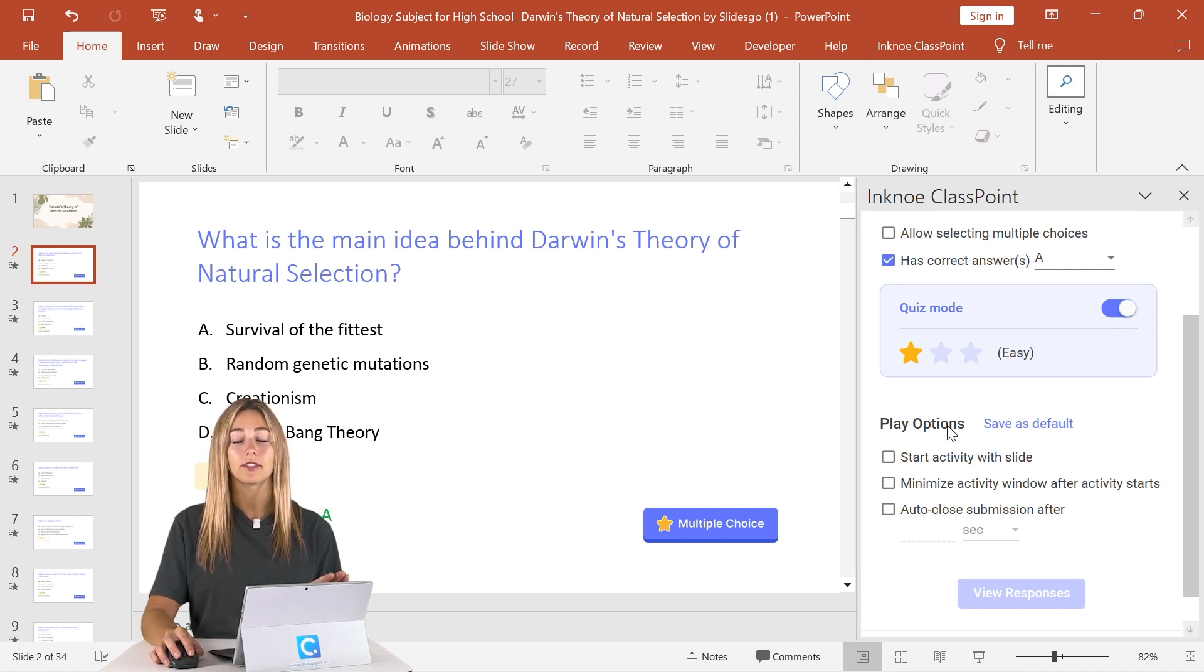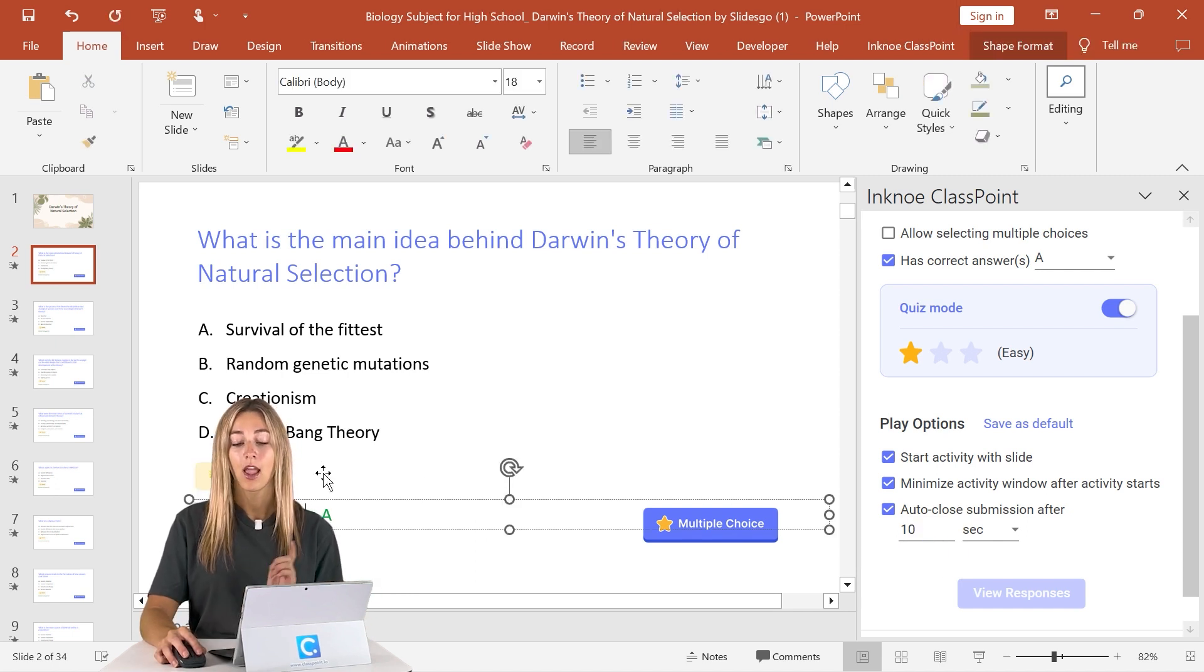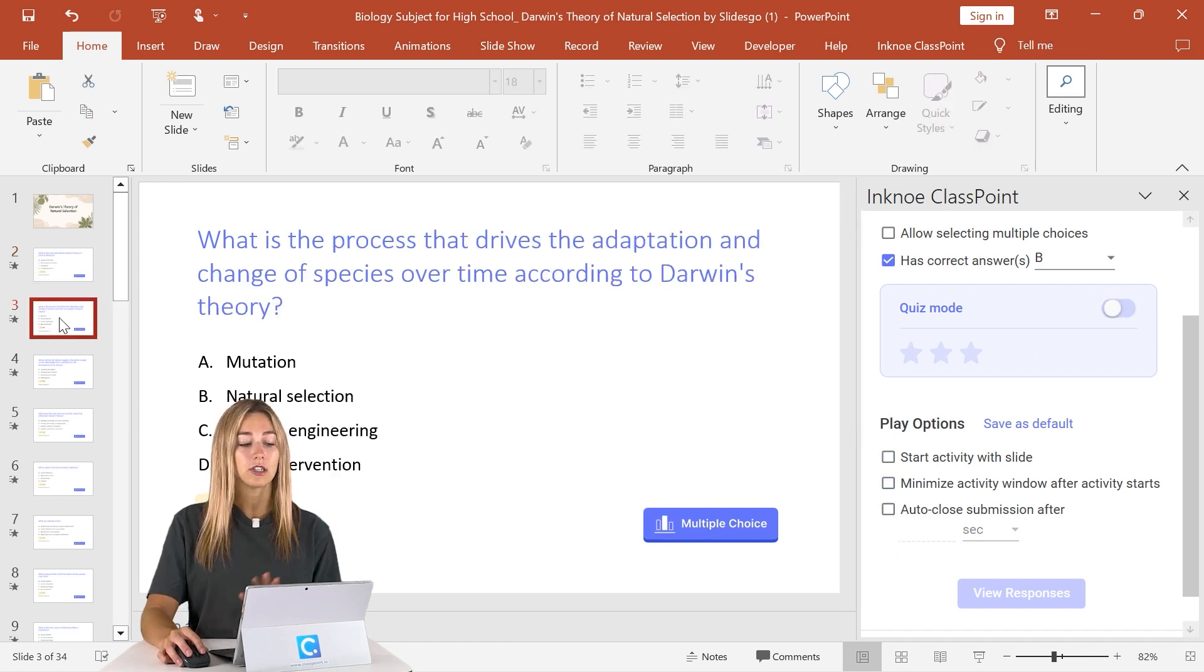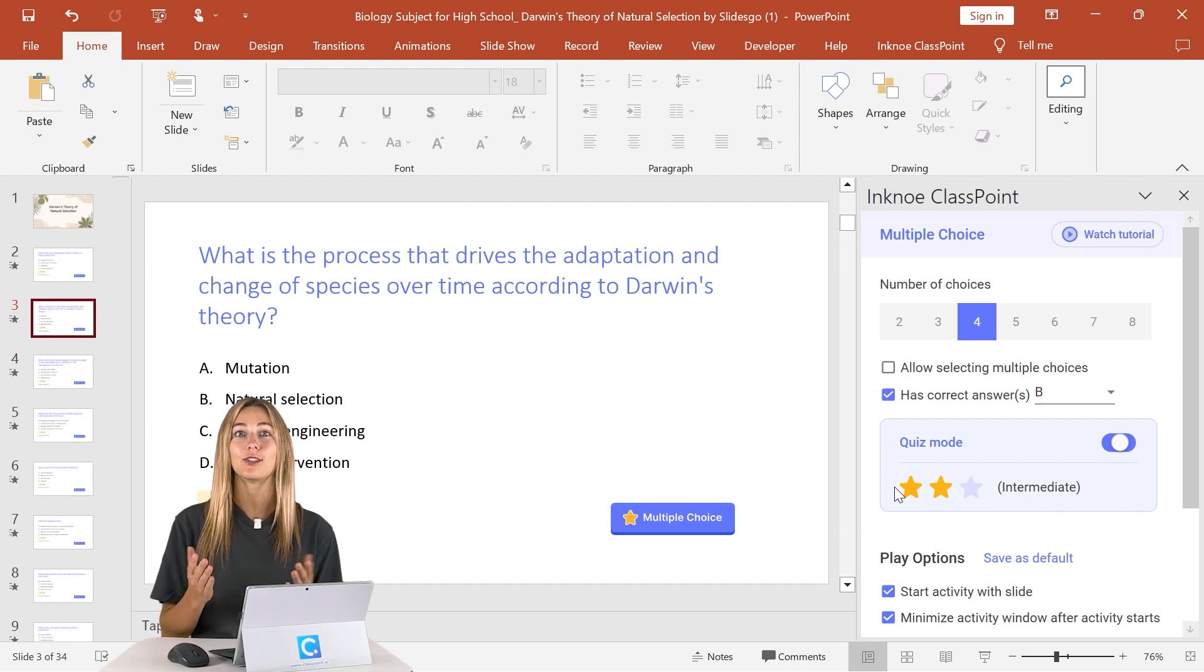When I'm running a quiz competition, I love setting up these play options so I have to do the least amount of manual work possible. So that means we're going to start our activity with our slide, minimize the activity window after it starts, and have it auto close after 10 seconds. That way it's a pretty quick competition. And the last thing I want to mention is you'll see the correct answer is here. There's an automatic animation added so that this box will cover it, and then when you click your mouse, the answer will be revealed. If you don't want to reveal your answer that way, you can just delete both of these boxes. But for now, let's make those same changes to all of our other questions, and then we'll be ready to join with our audience.